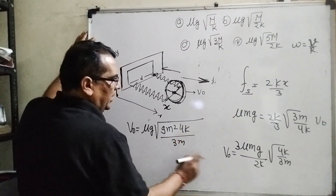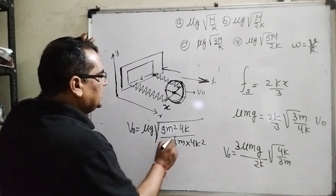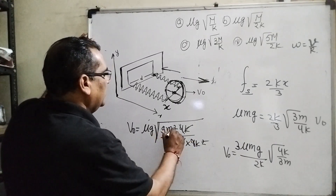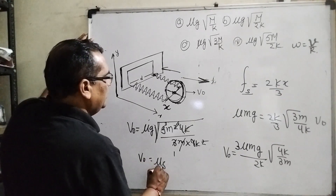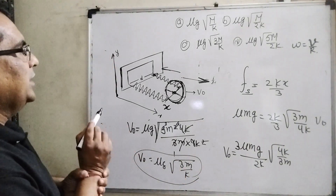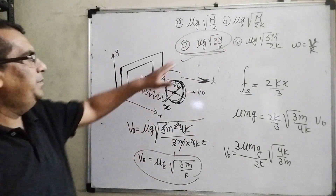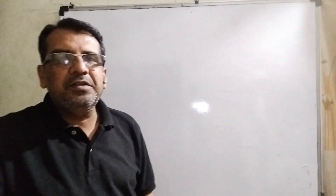Solving for v₀ and simplifying — the 4 and k terms cancel, leaving v₀ equals μg·root(3m/k). Comparing with the options, option C is correct: μg·root(3m/k). I hope you understand this question. Thank you for staying till the end of this video. Please don't forget to subscribe to my channel. Thank you, bye bye and take care.